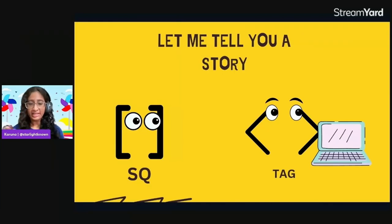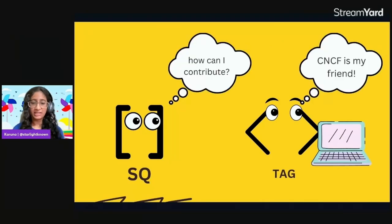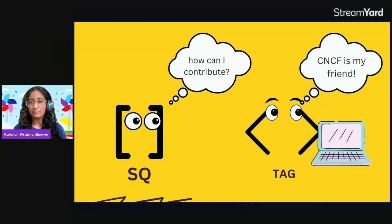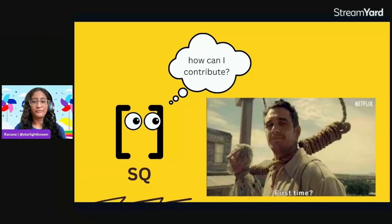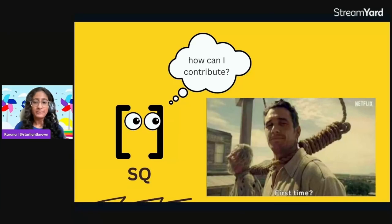Let me introduce you to two characters. We have SQ and Tag. SQ is wondering how they can contribute, because contributing to CNCF is sometimes difficult. And then there is Tag, who has been contributing to CNCF for a long time — a pro coder who does everything well. We can all relate to SQ at some point, where we were new, struggling, figuring out things, or just blaming the system.